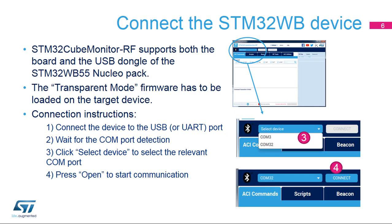The tool is connected to the device via a serial port. The device must have the transparent mode firmware. This firmware configures the UART communication and forwards the ACI commands to the BLE stack. To connect the device, connect it to your PC using the STM32 Cube Monitor RF tool via its USB or UART port. Wait for the device to be detected. If VCP or USB serial converters are used, additional drivers may be required.